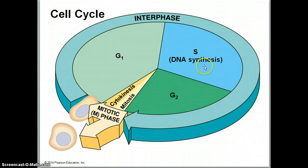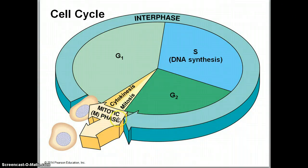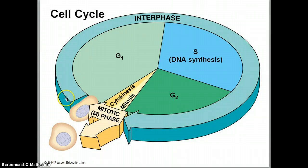S stands for synthesis — this is when DNA is replicated. G2 stands for gap two. Mitosis is a very small part of a cell's life. During the mitotic phase, cells are going to go through mitosis and also cytokinesis. The thing to keep in mind is that the majority of the time is spent in interphase.